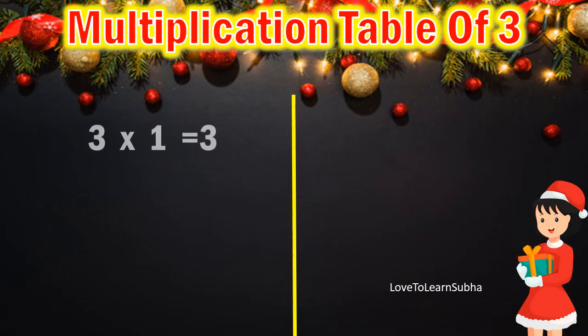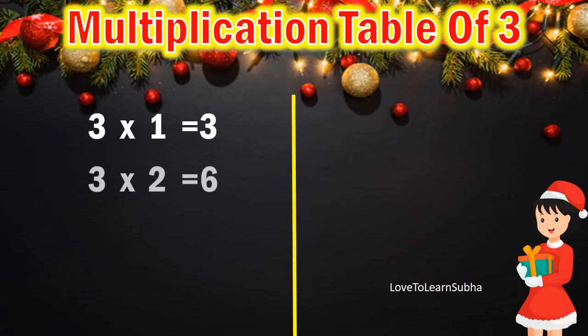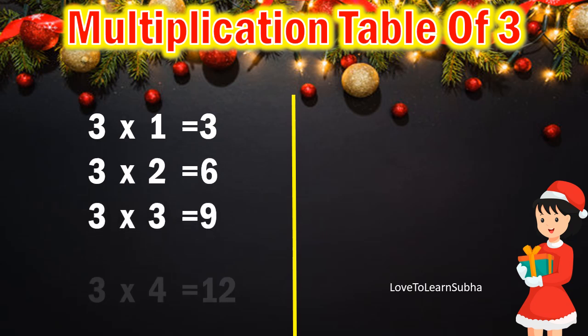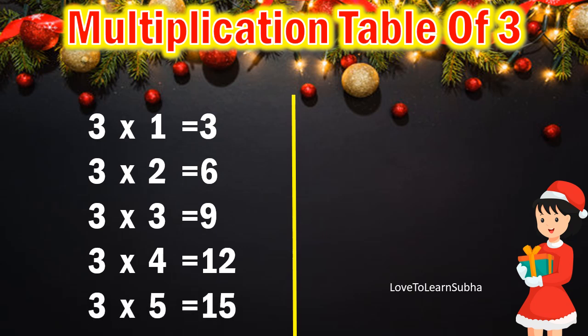3 1s are 3, 3 2s are 6, 3 3s are 9, 3 4s are 12, 3 5s are 15.